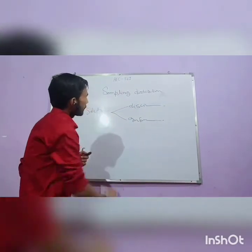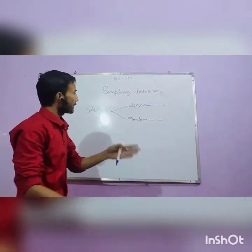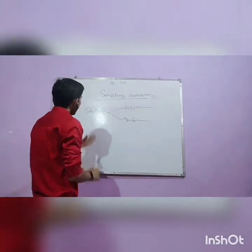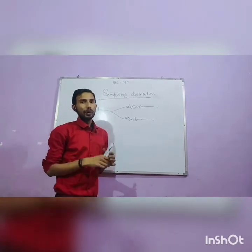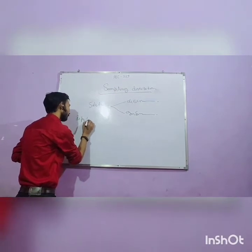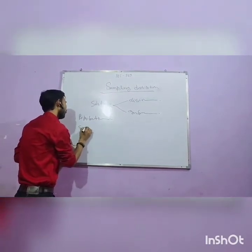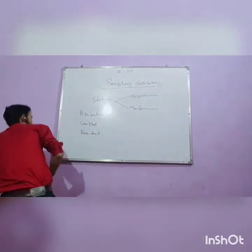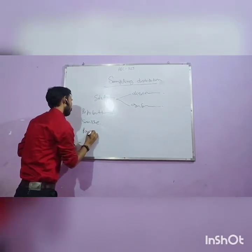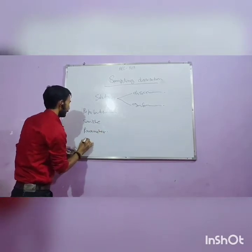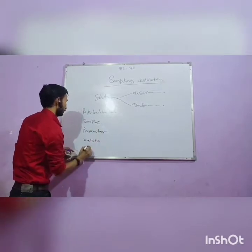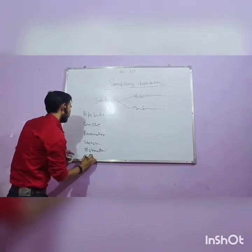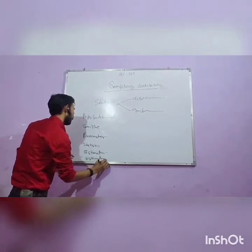If any distribution used to measure the population value by the sample value is known as sampling distribution. In this sampling distribution, some terminology is used like population, sample, parameter, statistic, estimation, estimator, and sampling.